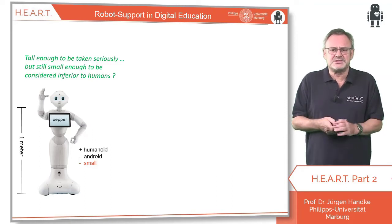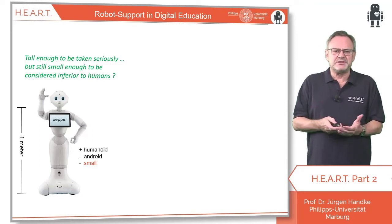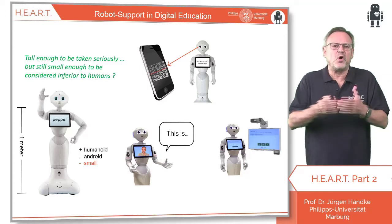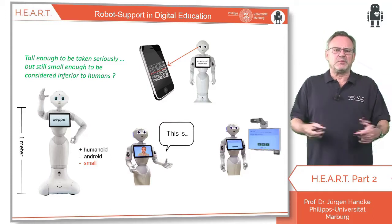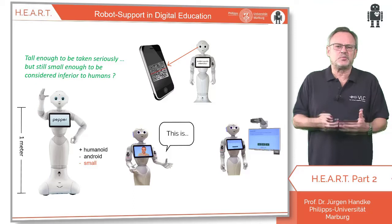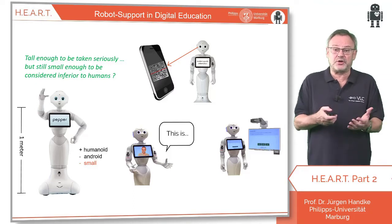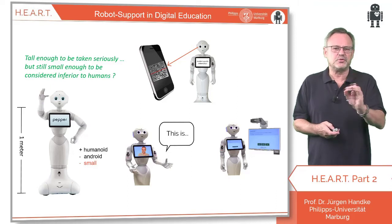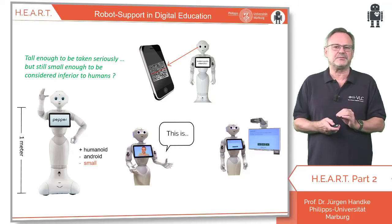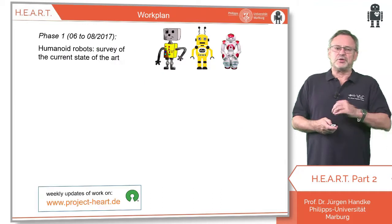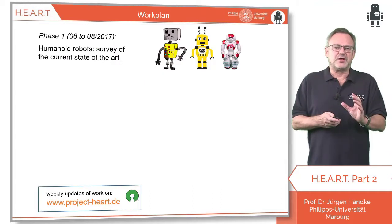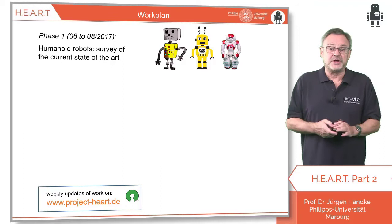We assume that our robot Pepper has just the right size and the required capabilities to do exactly that. But in order to become an assistant in class, Pepper needs a number of apps that he can perform on request. We have to understand whether and how these apps work — that's exactly the goal of HEART: Humanoid Emotional Assistant Robots in Teaching.